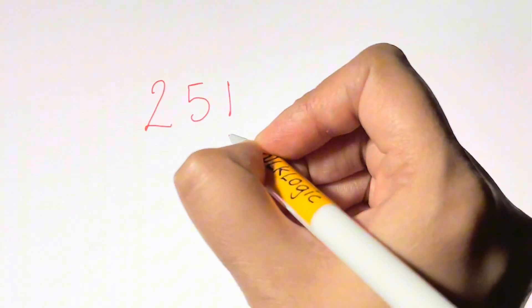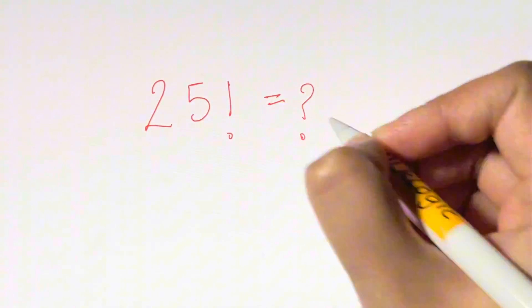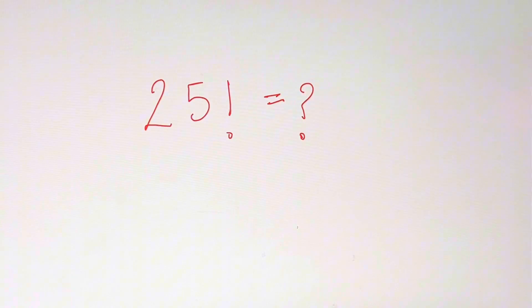So you do this one: 25 factorial has how many trailing zeros at the end? Let me know in the comments. Thank you so much for watching, bye bye, take care.